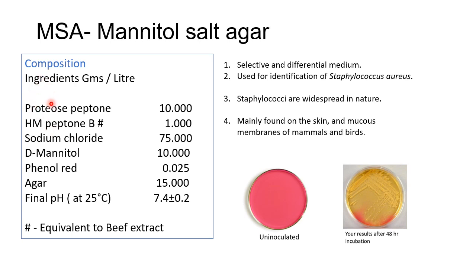The composition of MSA includes proteose peptone, HM peptone B which is equivalent to beef extract, sodium chloride, D-mannitol, phenol red, and agar, at a pH of around 7.4. On an uninoculated plate the color is red due to the phenol red indicator, and when Staphylococcus aureus grows on it, the color changes to yellow.